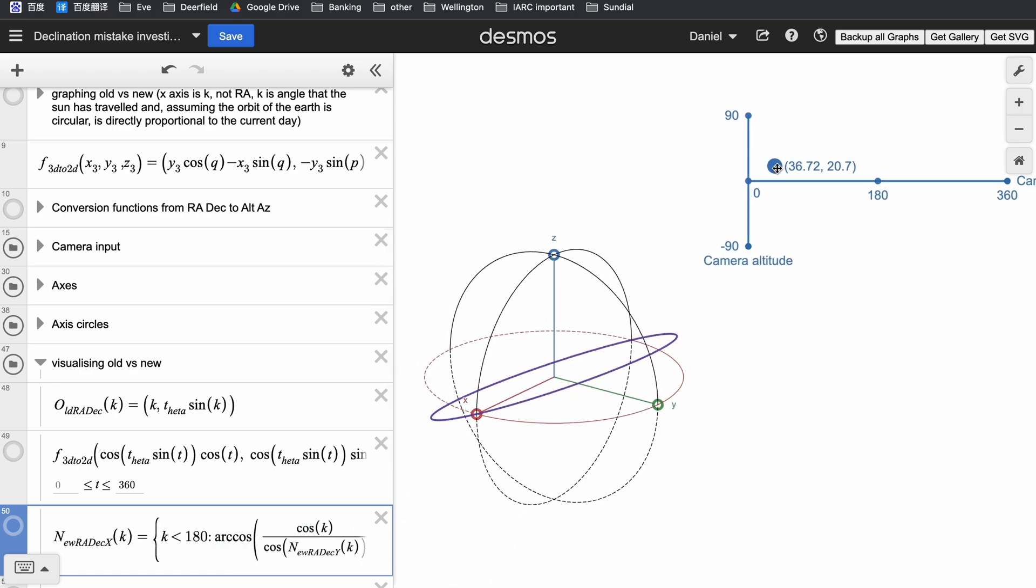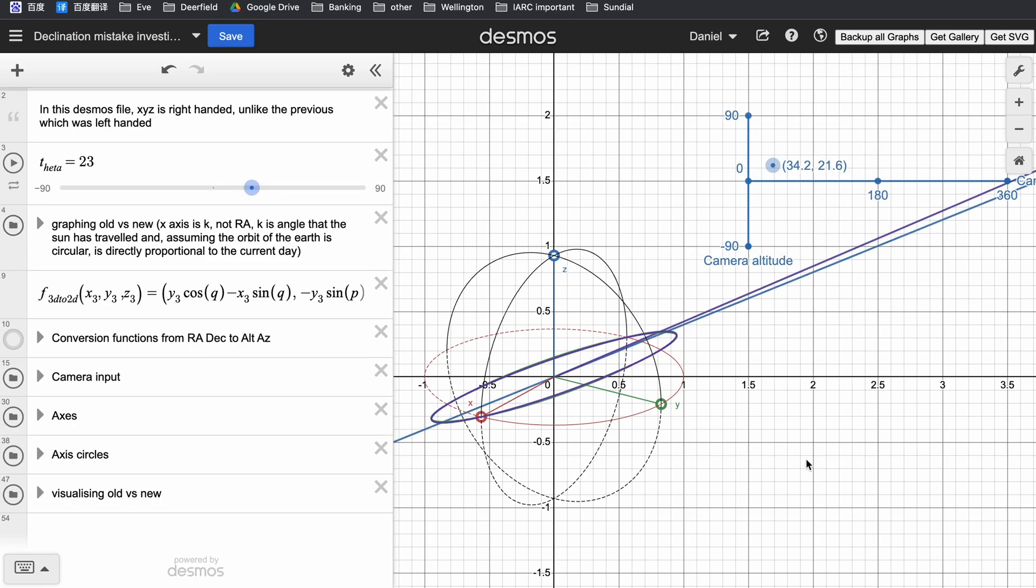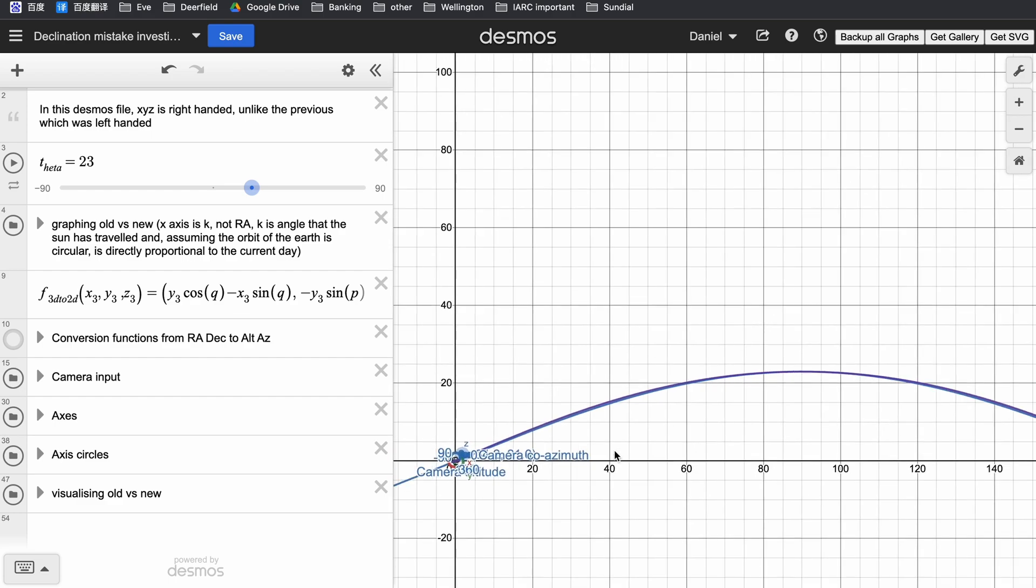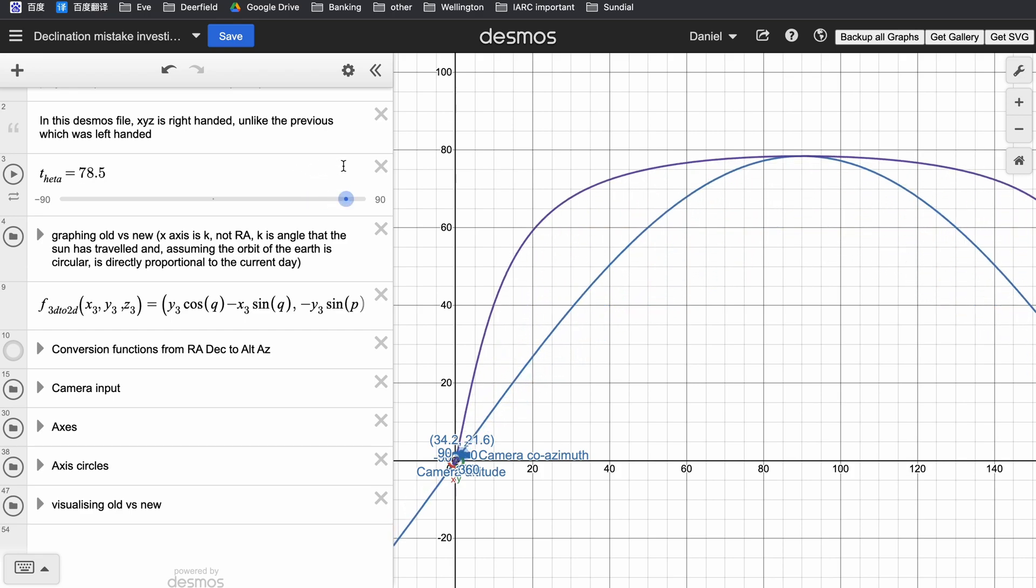And lastly, instead of looking at these curves on the surface of a sphere, we can enable the grid and axes in Desmos and look at the graphs of what I assumed to be a pure cosine versus the actual graphs of the right ascension and declination. As I increase theta, the blue curve stays as a pure cosine, but the purple curve changes and deforms in shape.